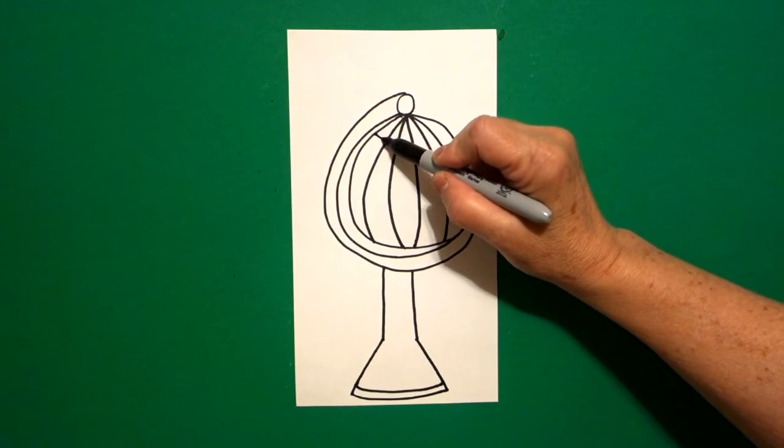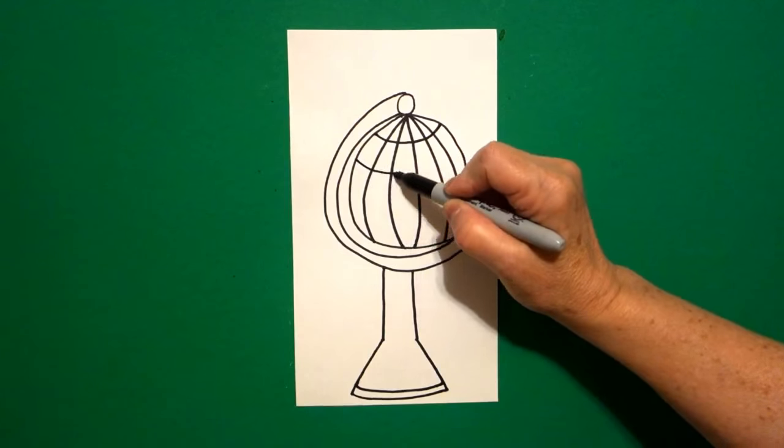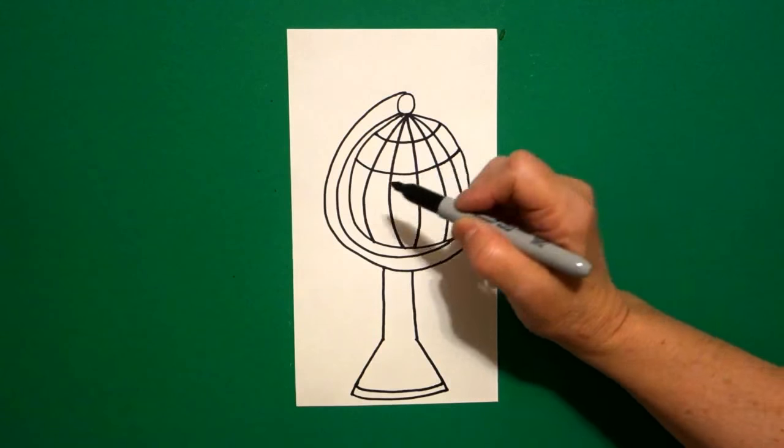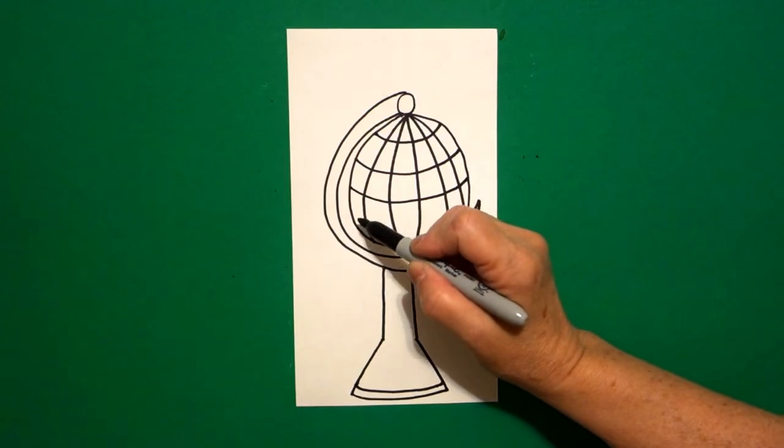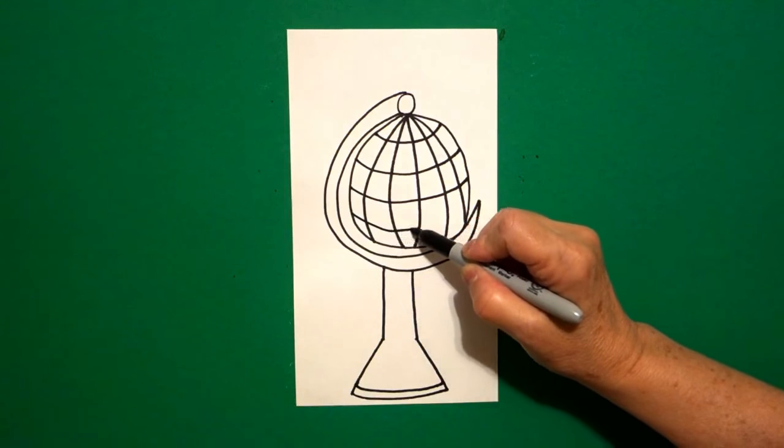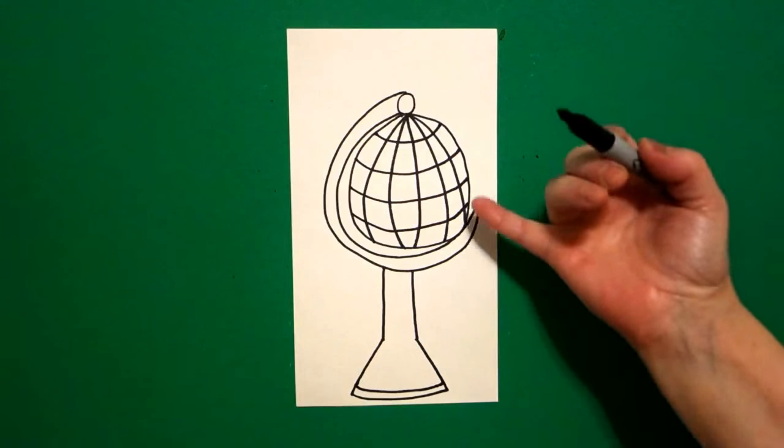horizontal way. So starting at the top, I do a curve line over, connect, curve line over, connect, curve line over, connect, and one more if you can fit it, curve line over, connect. This will be easier to see once we start coloring.